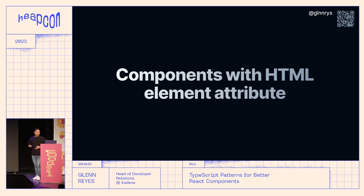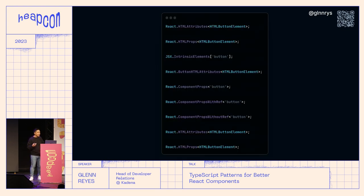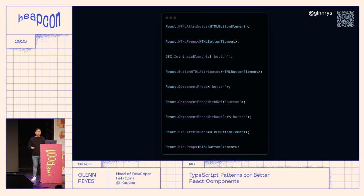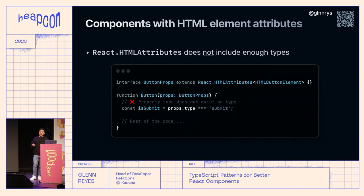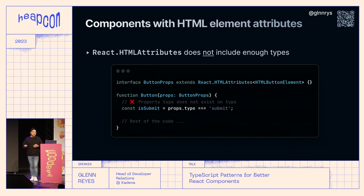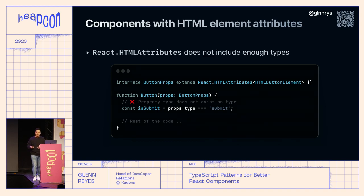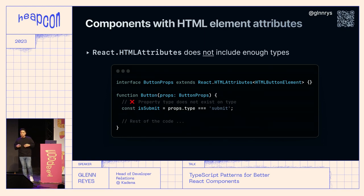Now let's talk about enhancing components with HTML attribute types. In React there are a variety of ways to do that, and you may not know all the differences, which can be quite daunting when you first start typing or enhancing your components with HTML element attributes. First, there is HTMLAttributes — this does not include every type. It's more of a type compatible with pretty much every HTML element: what types do all elements have in common. It provides a different purpose but is not the right one if you want a complete set of element-specific types.